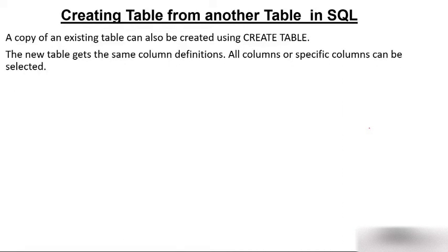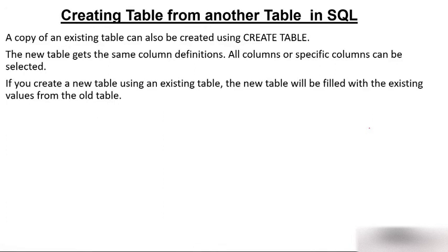Either you can select all columns of the existing table or only the columns you want. Suppose your existing table has five columns and you want only two — you can do that. If you create a new table using an existing table, the new table will be filled with existing values from the old table.